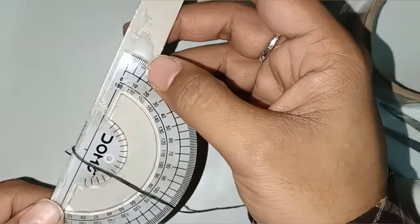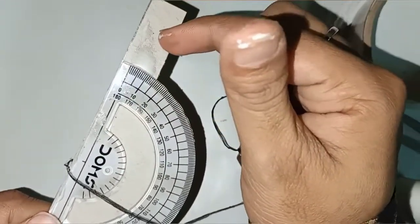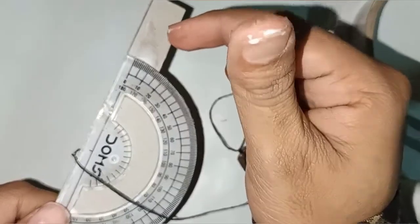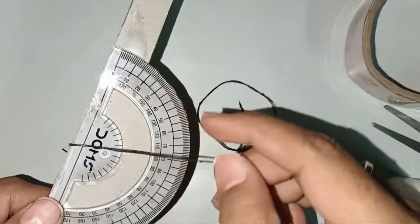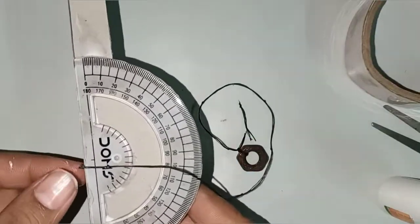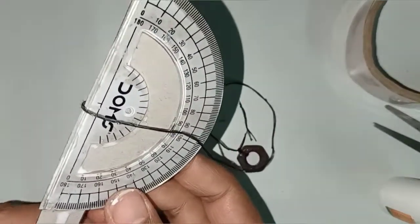Instead of this paper, you can use a straw also. That will be better, I think. So this is our clinometer. It's already working.